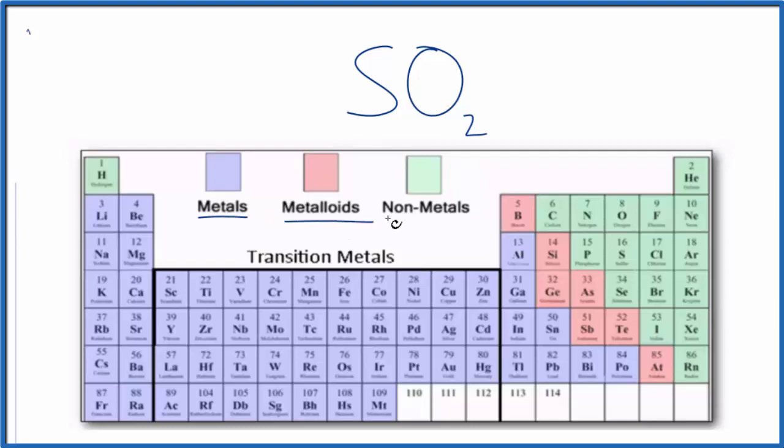So for sulfur, that's right here, that's a nonmetal, and then oxygen, that's also a nonmetal. So since we have these two nonmetals here, we have a covalent or molecular compound. Two nonmetals gives us our molecular compound.